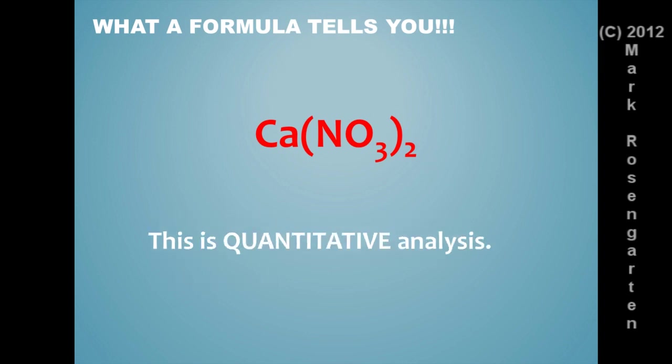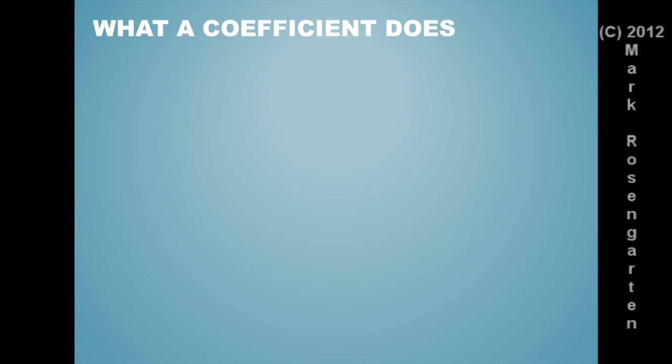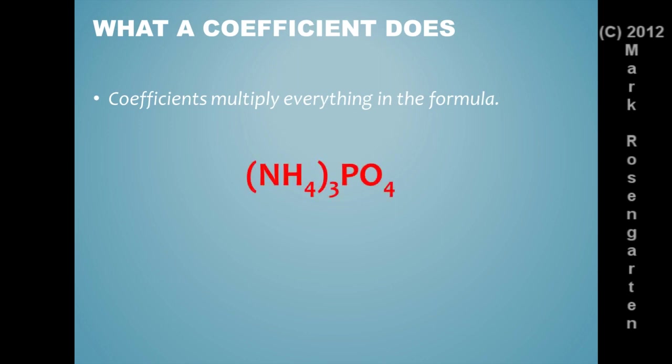This is quantitative analysis because you're dealing with numbers. Now, sometimes it's important to throw a coefficient in front of a formula. The coefficient multiplies everything in the formula. So, for example, in this formula we have three nitrogens and twelve hydrogens and one phosphorus and four oxygens. But if we throw a coefficient of three in front of it, that multiplies all of those by three.